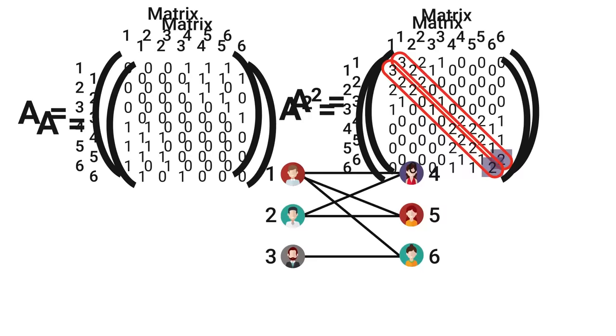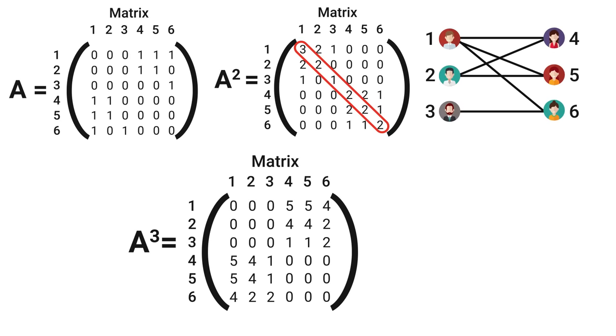Then if we multiply the new matrix by the original, the same as finding the original cubed, we get all the paths of length 3 from one person to another. See the original matrix to some power tells us how many paths of that length exist between any two nodes.